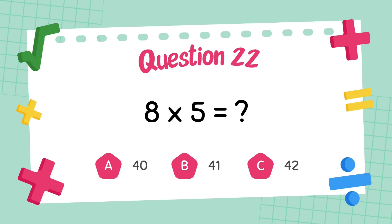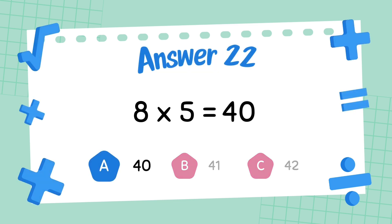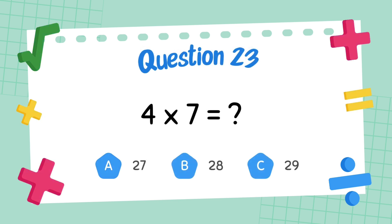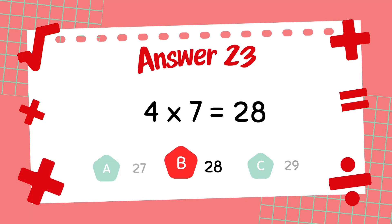What is 8 multiply 5? The answer is 40. What is 4 multiply 7? The answer is 28.